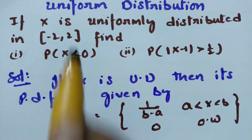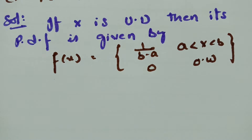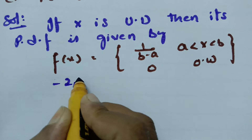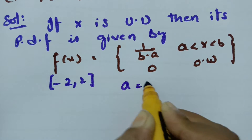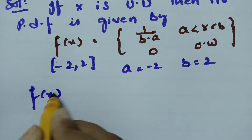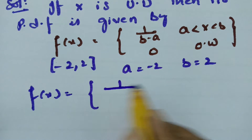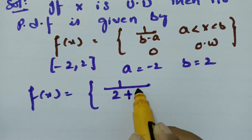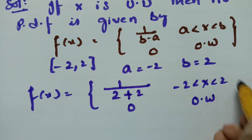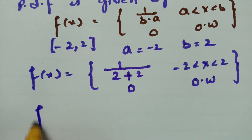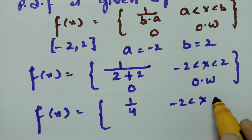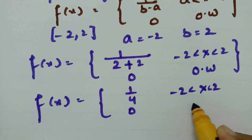The interval here is given as minus 2 comma 2. Therefore, a is equal to minus 2 and b is equal to plus 2. If I substitute, then the probability density function value will be 1 by 4, when x lies between minus 2 to plus 2, and 0 otherwise.